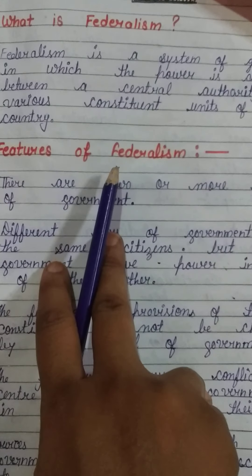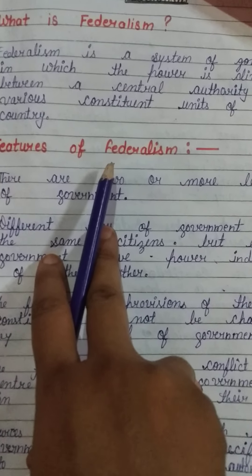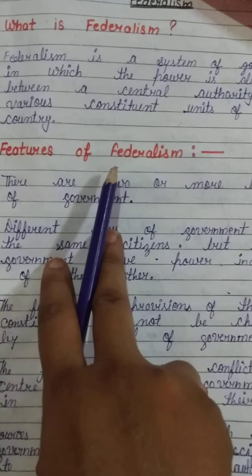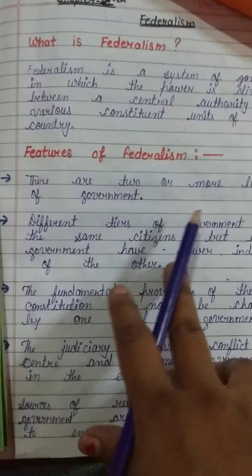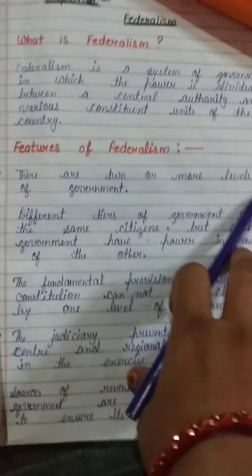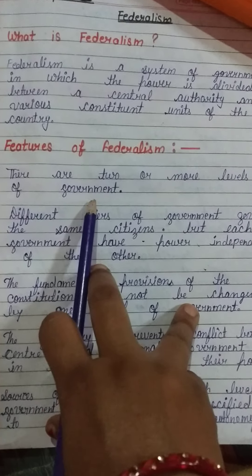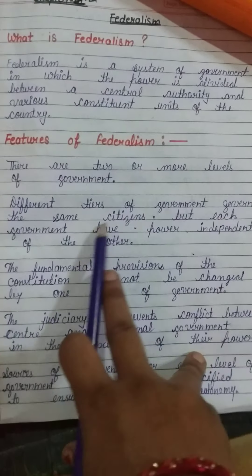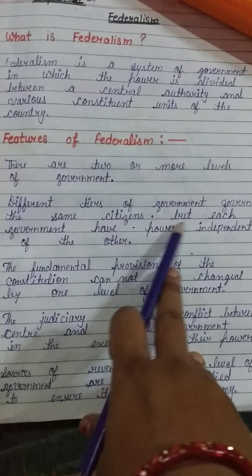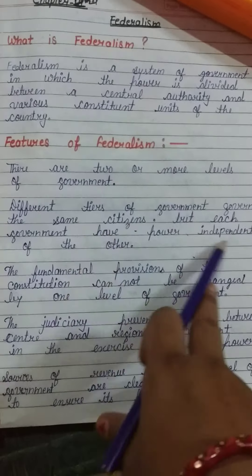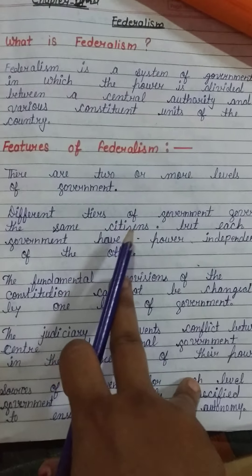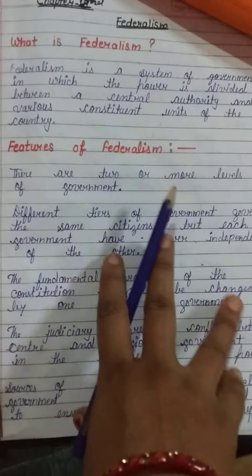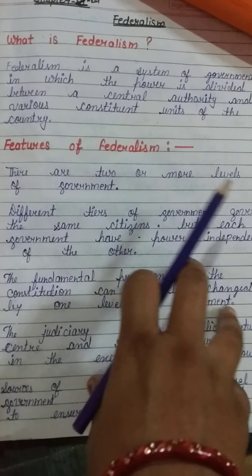Our country is a federal country because in India power is shared between the central government, state government, and local government. Features of federalism: there are two or more levels of government, and different tiers of government govern the same citizens, but each government has power independent of the other.